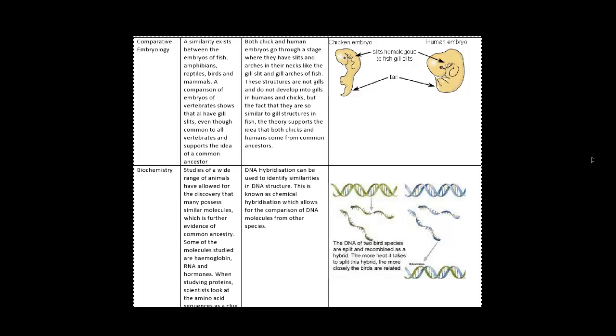In my actual example, I used the similarity between both chick and human embryos where they both go through a stage where they have slits and arches in their necks. And just like the gill slit and gill arches of the fish, we don't actually end up using these but we still have them in our embryos. What I mean to say is that since these were in the embryos, the theory helps us support the idea of both chicks and humans come from common ancestors. Here's a little diagram here showing what I actually mean by that. Here's a chicken embryo and here's all the gills and the slits and stuff. And that's a tail. Human embryo, we've got the same thing. This little similarity inside our embryos may help us support the fact that we come from common ancestors.